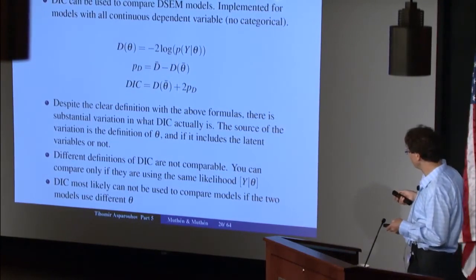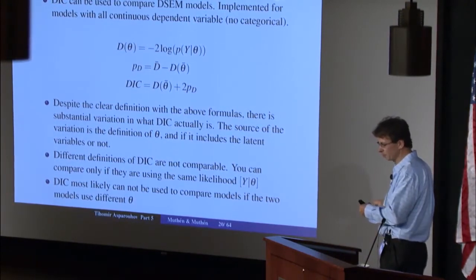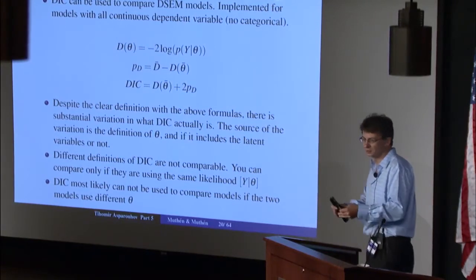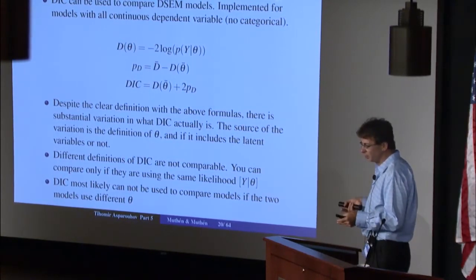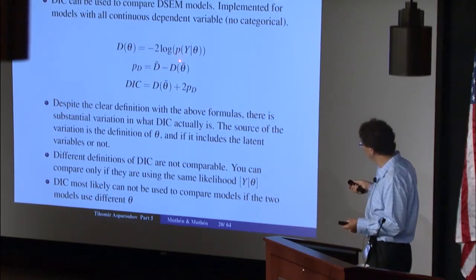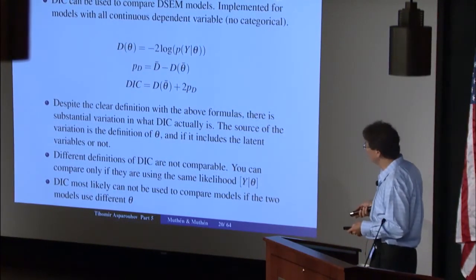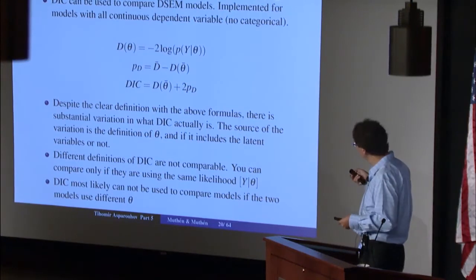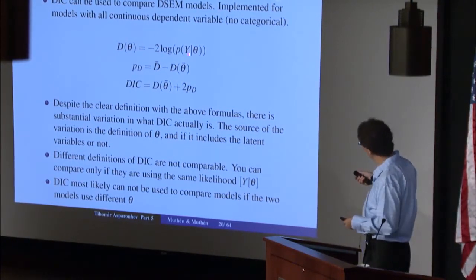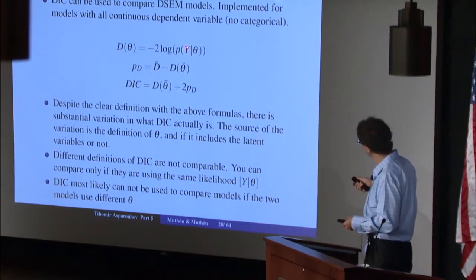For the same model you can compute two different versions of the DIC, depending on what you consider known parameters — whether latent variables are included or not. For example, in a simple factor analysis model, if the factor is considered a parameter, then the likelihood of the dependent variable is conditioned on the factor. A different way to define the DIC is to not consider the factor a parameter, but just use the model parameters — the loadings — in the theta vector. In that case, you use the model-implied variance-covariance matrix to define the likelihood for Y.